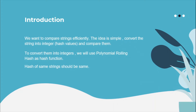What we are going to do is convert both strings and calculate the hash values of both strings. If we have hash values of those strings, then comparing two strings by hash values is a constant time operation.